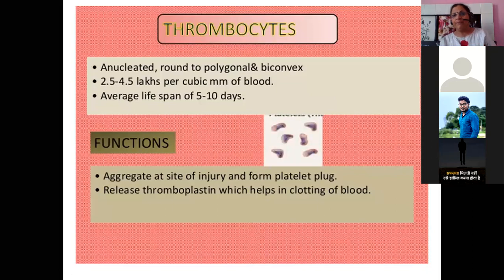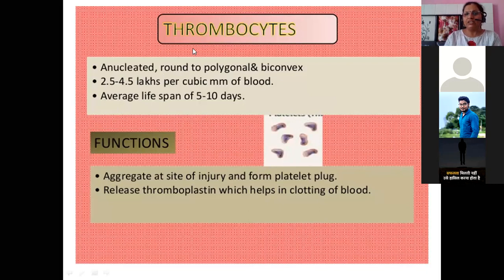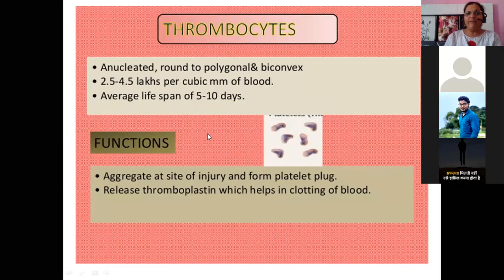Thrombocytes — platelets — are anucleated, round to polygonal, and bi-convex. Normal count is 2.5 to 4.5 lakhs per cubic mm of blood. Average lifespan is 5 to 10 days. Function: they aggregate at the site of injury, form a platelet plug, and release thrombocytin to help in clotting of blood.